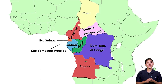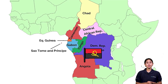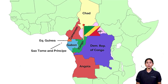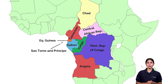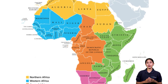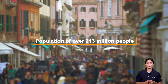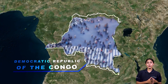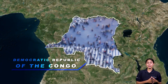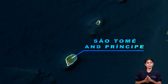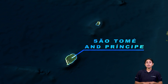Next are the countries of Middle Africa. Countries such as Angola, Cameroon, Central African Republic, Chad, Congo, DR Congo, Equatorial Guinea, Gabon, and São Tomé and Príncipe are the 9 countries of Middle Africa, with a population of over 213 million people. The Democratic Republic of Congo is the most populated country, and São Tomé and Príncipe is the least populous.